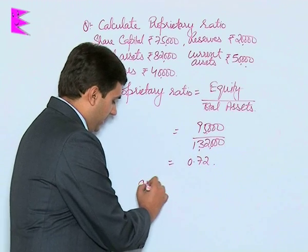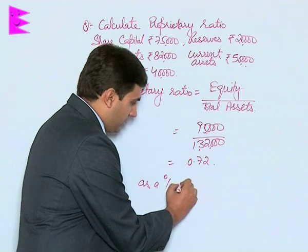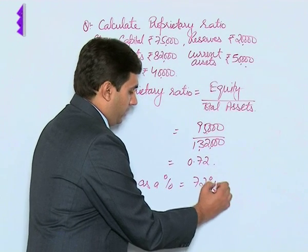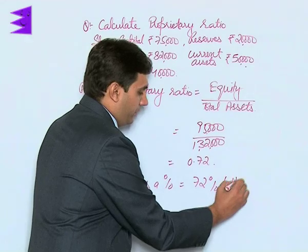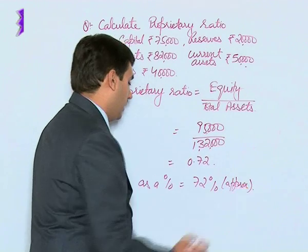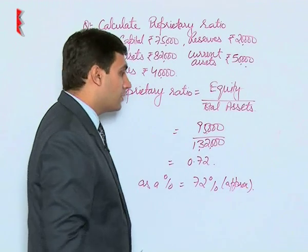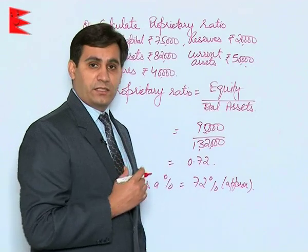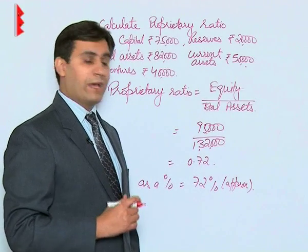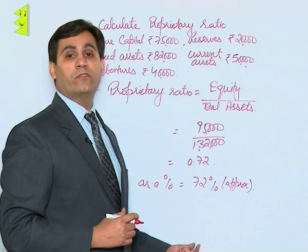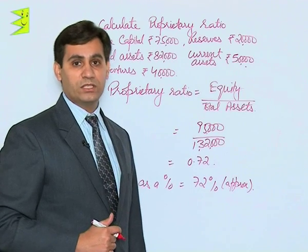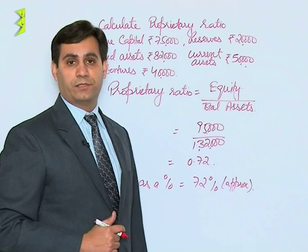The answer comes to approximately zero point seven two. This ratio can also be expressed as a percentage, which is approximately seventy-two percent. This means that out of the total assets, seventy-two percent of the value has been financed and funded by shareholders' funds.